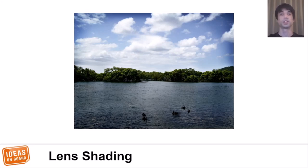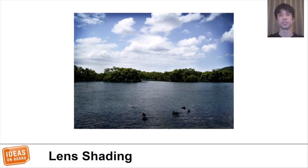That's not the only processing that needs to be done. Another example is lens shading. The lens of the camera is round, while the imaging sensor is square, which means that less light reaches the corners of the sensor. This makes the corners of the image dark, like in this picture.